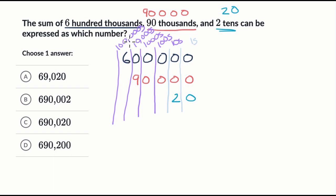So it's 6 hundred thousands and nine 10,000's, which is the same thing as 90 thousands. And then we have 2 tens. But let's add it all up.